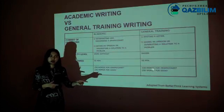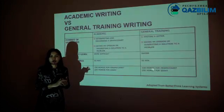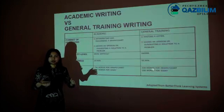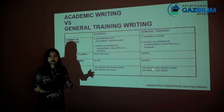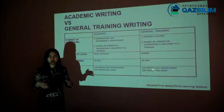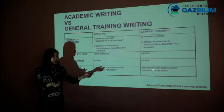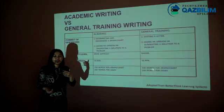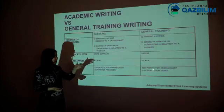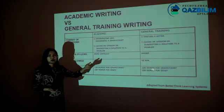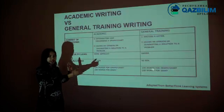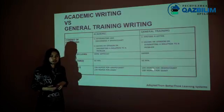In Academic IELTS the second task is as described, but in General Training IELTS the first task is to write a letter — for example, write a letter to your teacher or to your grandmother. The second part of General Training IELTS is the same as the Academic test. Academic IELTS writing tasks 1 and 2 are more difficult than the General Training tasks 1 and 2, which is why the academic test is considered more challenging.